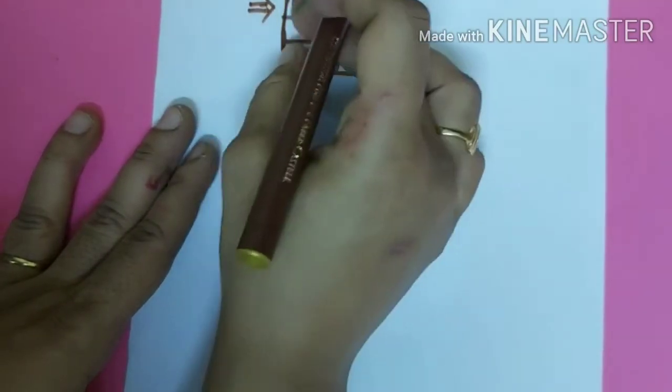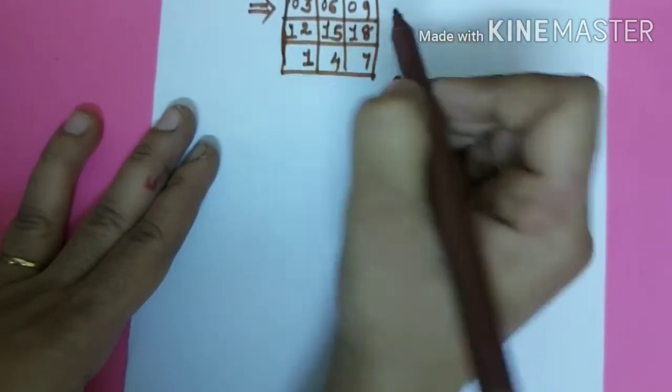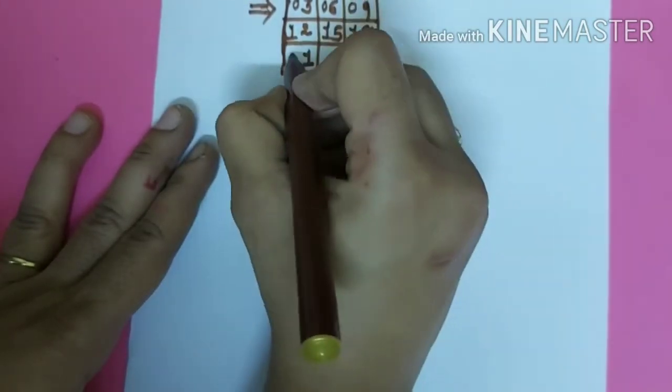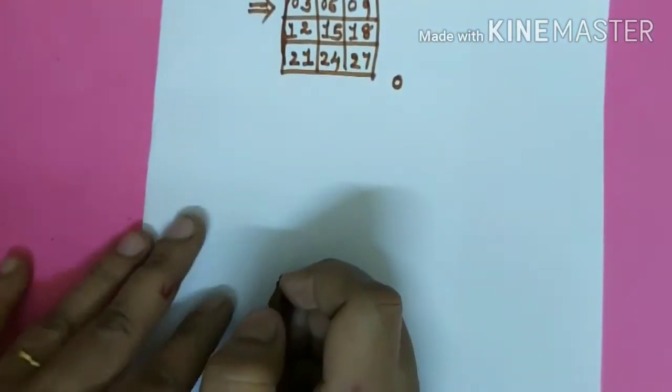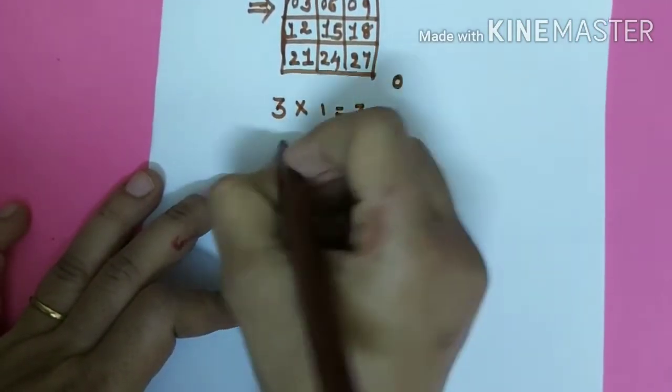After that in second row you have to write down one, one, and one. And in third row you have to write down two, two, two. Now let's start table of three. Three ones are three.